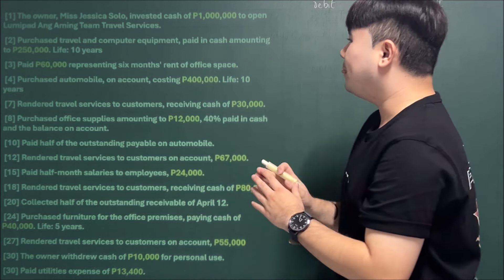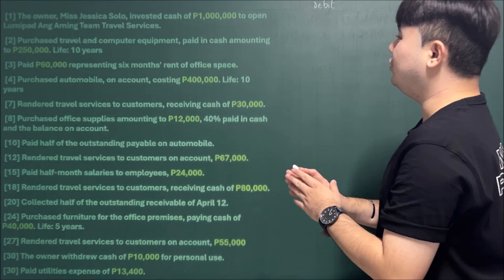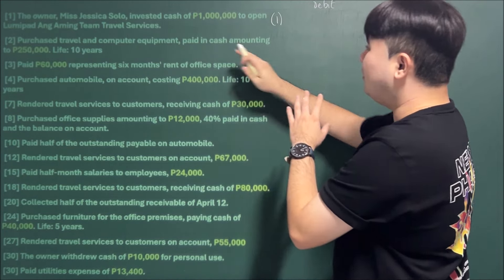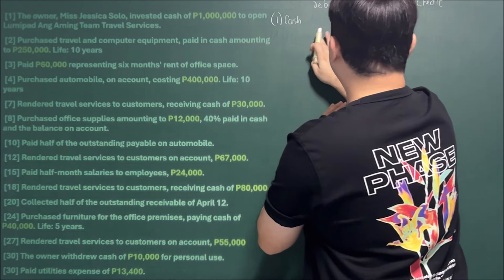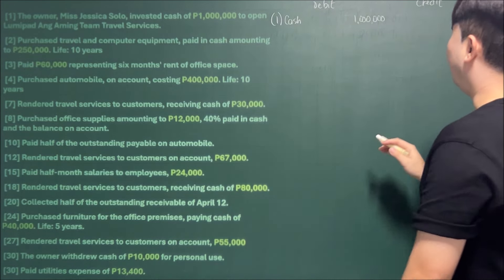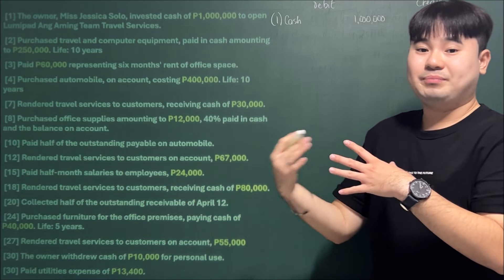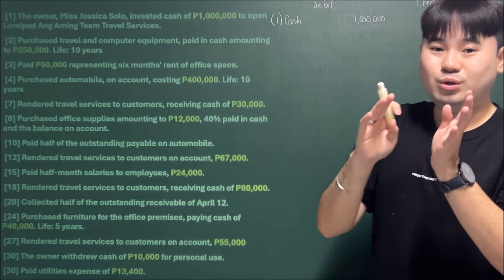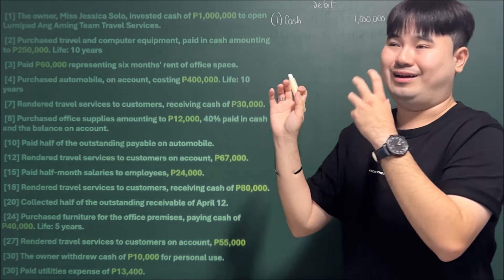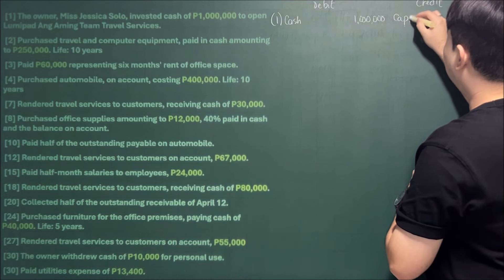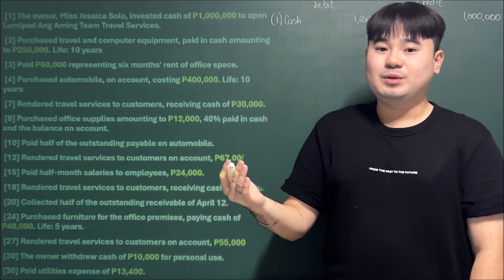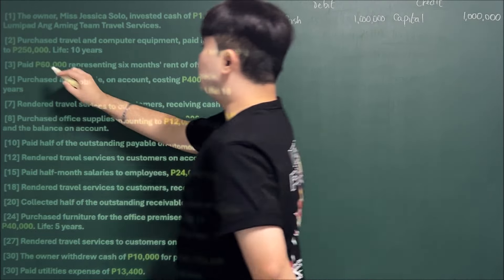First entry: The owner Ms. Jessica Solo invested cash of 1 million to open Lumipad ang Aming Team Travel Services. We debit cash for 1,000,000 — because cash came in — and credit Solo Capital (or simply Capital) for 1,000,000 since she invested money into the company. That completes the first transaction.